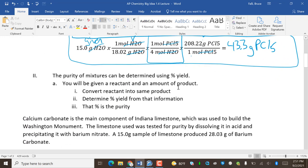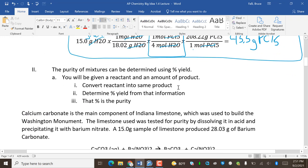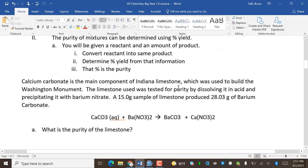The purity of mixtures can be determined using percent yield. You'll be given a reactant and an amount of product. We're going to convert the reactant into that same product they gave you an amount for. We're going to determine the percent yield from that information, and that percent yield is going to be considered the purity.